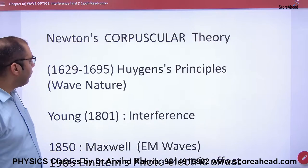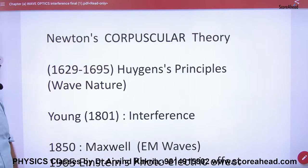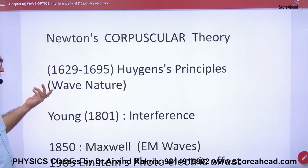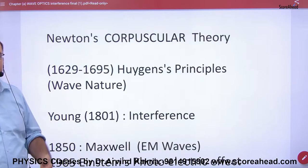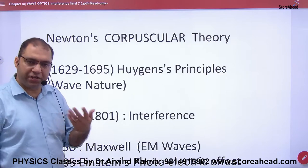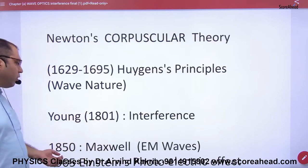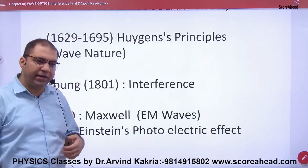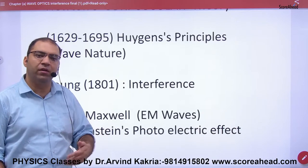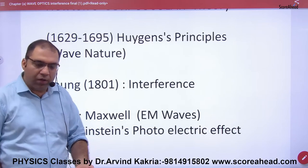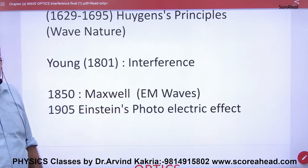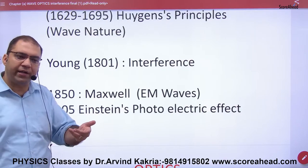If we talk about history, Newton made his theory. After that, Huygens had a principle. We will discuss Huygens' principle, which indicated that light has a wave nature. A young scientist in 1801 mathematically proved that light is a wave. After that, Maxwell also worked on electromagnetic waves and realized that light is an electromagnetic wave.